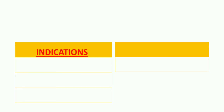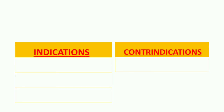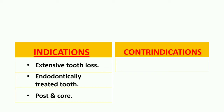Indications for full coverage or complete coverage veneer retainers: first is extensive tooth loss, second is endodontically treated tooth, and third is post and core. We give this retainer where there is loss of extra tooth material — for example, if the tooth is highly carious, endodontically treated, or treated with a post and core — so we support that tooth from all surfaces.